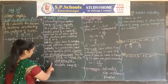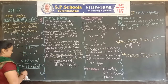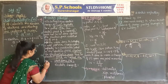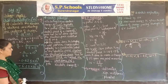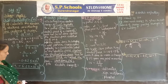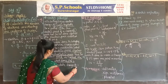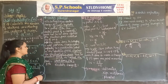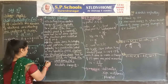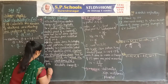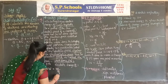Electric potential is equal to work done divided by charge. The symbol of work is capital W and charge is small q. So the formula of electric potential is capital V = W/Q.